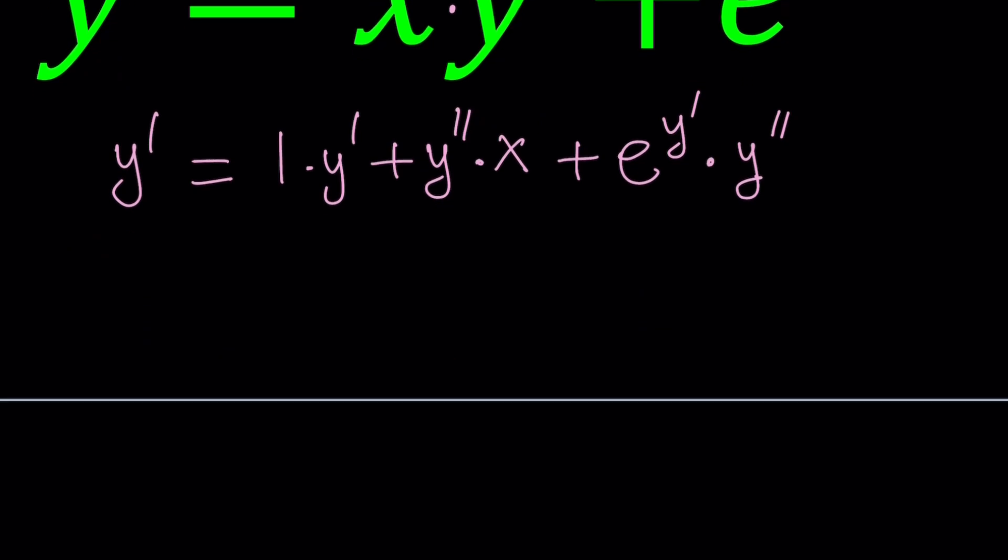Now, let's go ahead and simplify this. Because we have y prime on both sides, we can actually go ahead and cancel these out. And that gives us y double prime. We can factor it. x plus e to the y prime. And this is equal to zero. Because there's nothing left here.